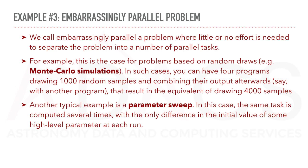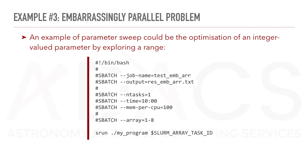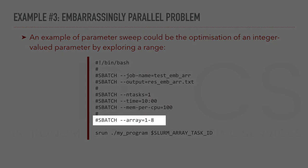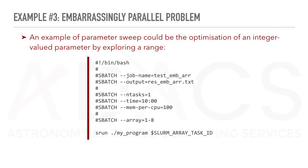Another typical example is a parameter sweep. In this case, the same task is computed several times, with the only difference being the initial value of some high-level parameter at each run. An example could be when we are looking for an optimal integer value by exploring a certain range. This parameter sweep can be achieved with Slurm by using the Array option — for example, from 1 to 8 — and then calling our program using srun with the SlurmArrayTaskId variable to explore our parameter space.